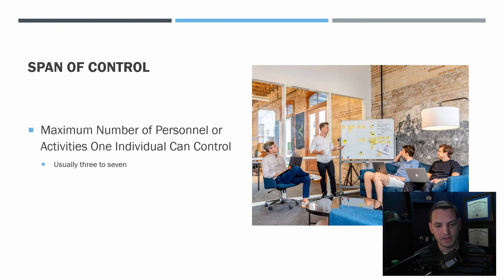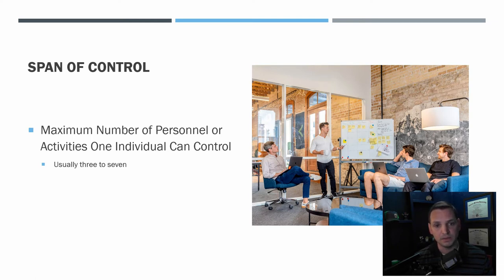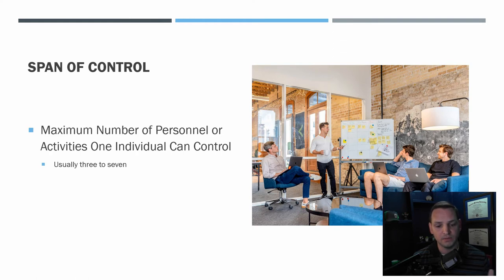Span of control: one leader can't run everybody, so there's a maximum number of personnel one individual can effectively control — usually three to seven. That's the generally accepted number in professional organizations and the military. In the military, an element leader might have five to seven soldiers underneath them, then you have a flight or squadron leader with multiple squad leaders, and so on up the chain.